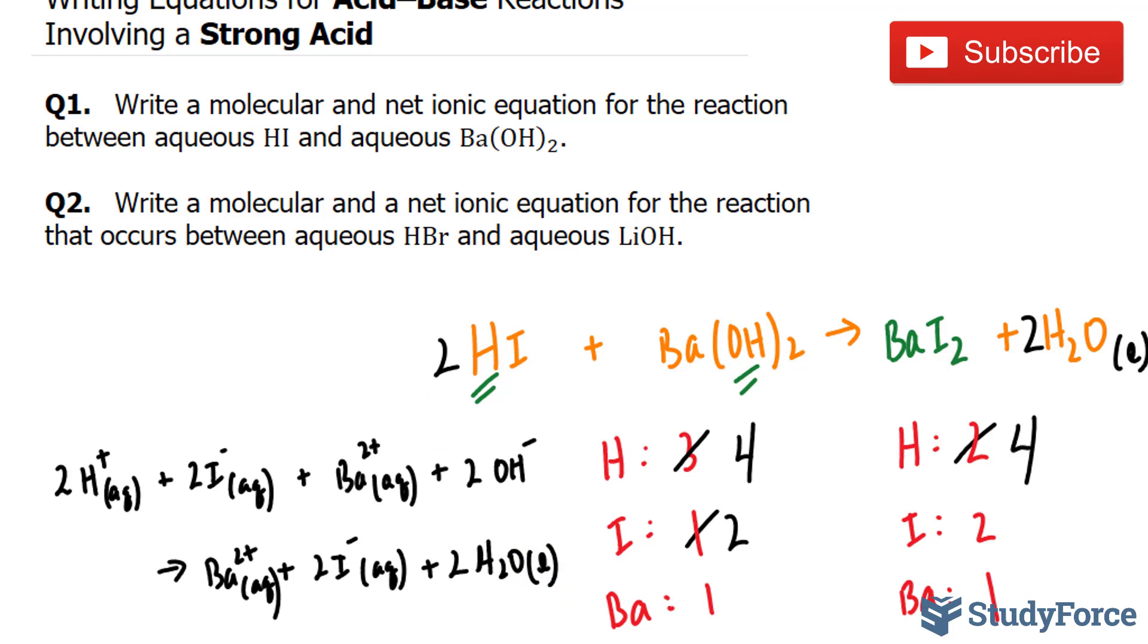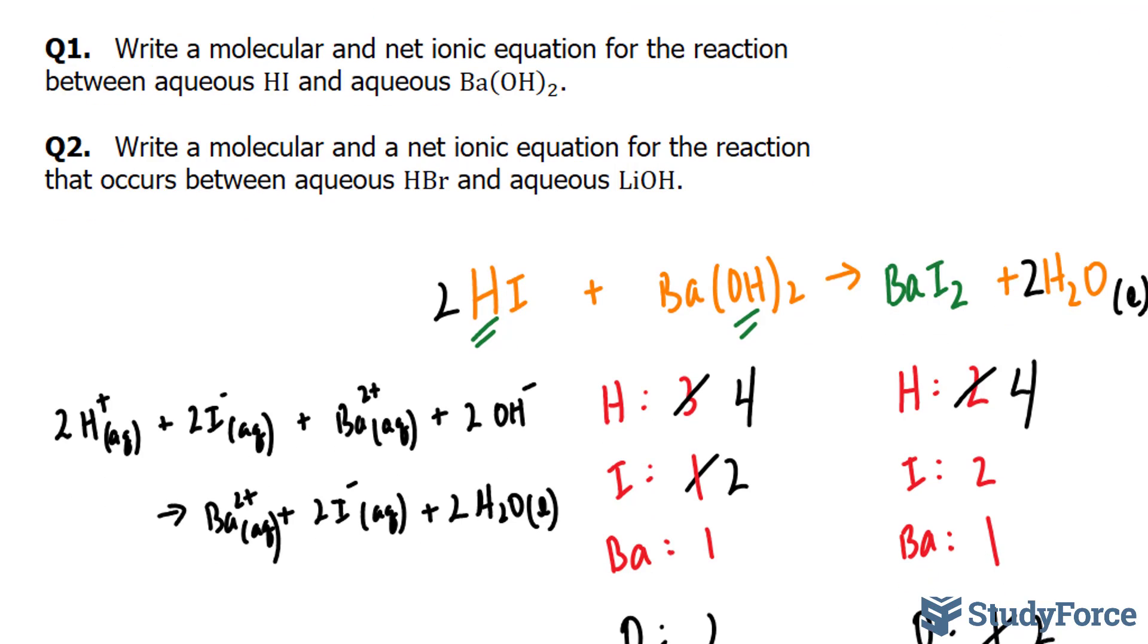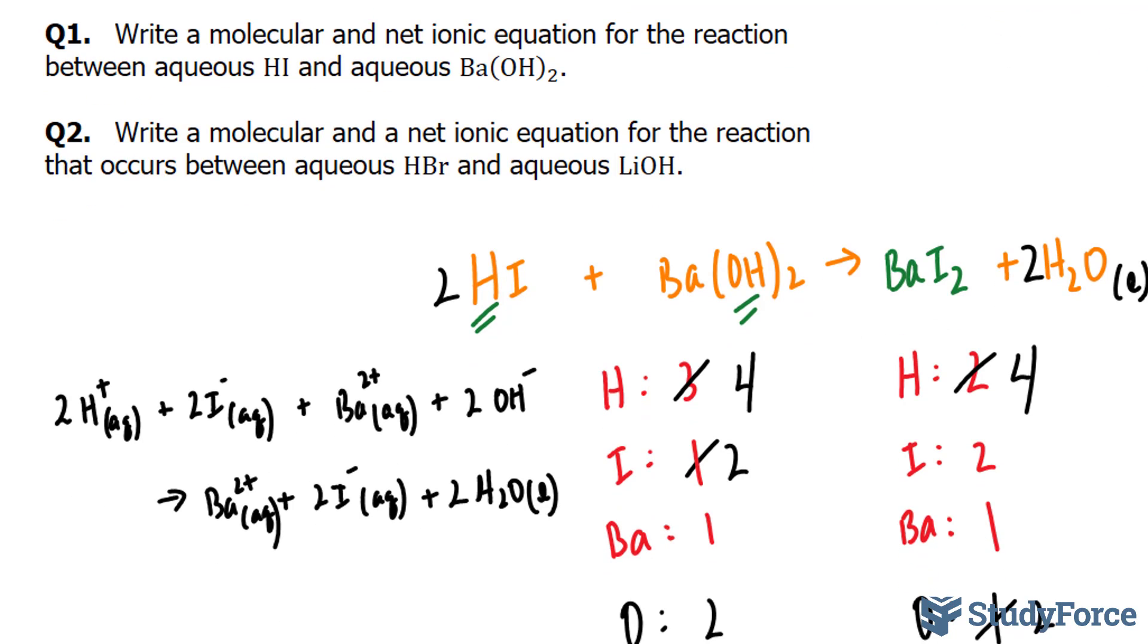Once you've written out all the dissociated versions of these compounds, we now need to get rid of the spectator ions. So you have to look on the left and the right side and see where there are similarities. Then you can cancel them out. For example, we have two iodine ions on the right side, two on the left side. We have barium on the left side, barium on the right side,